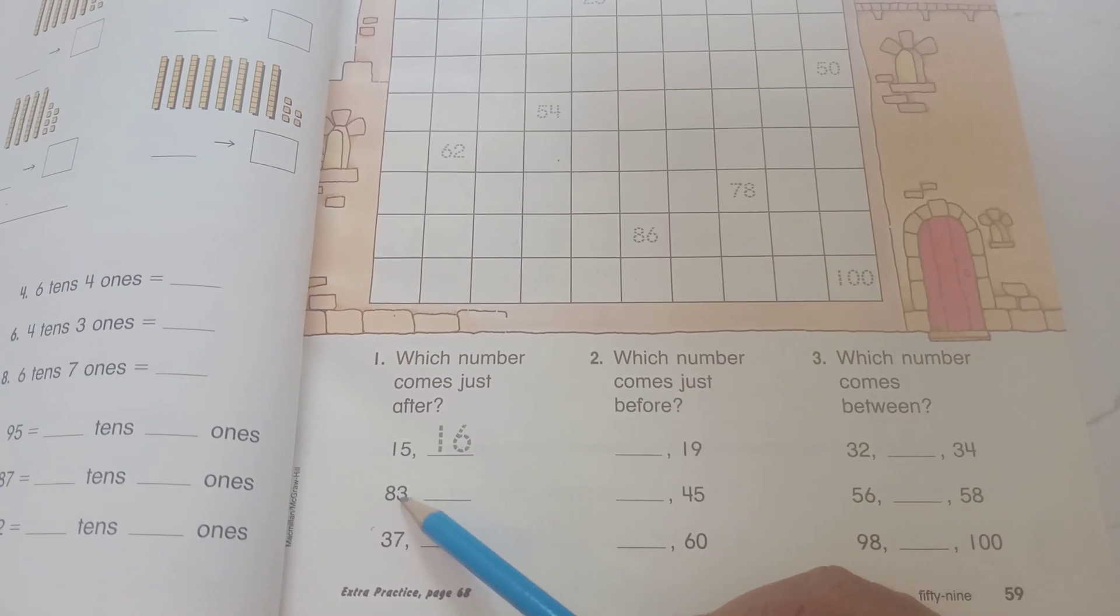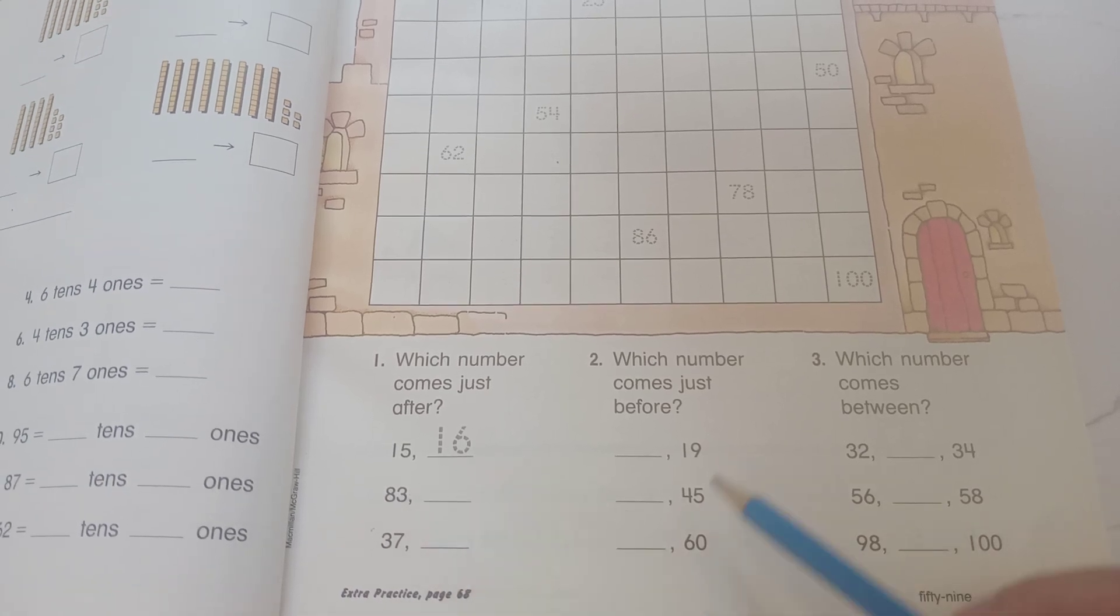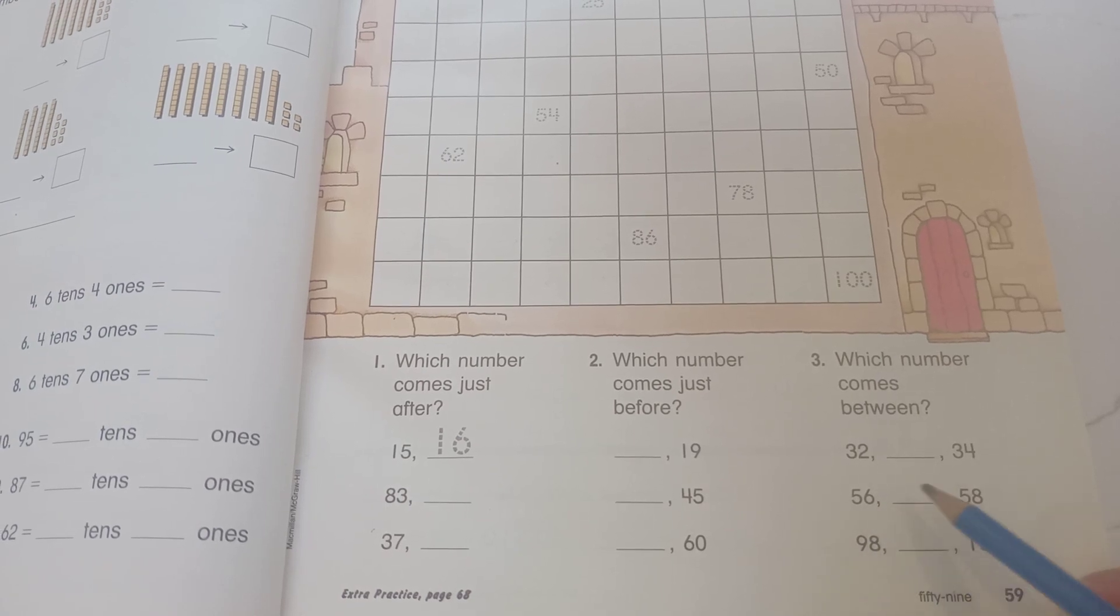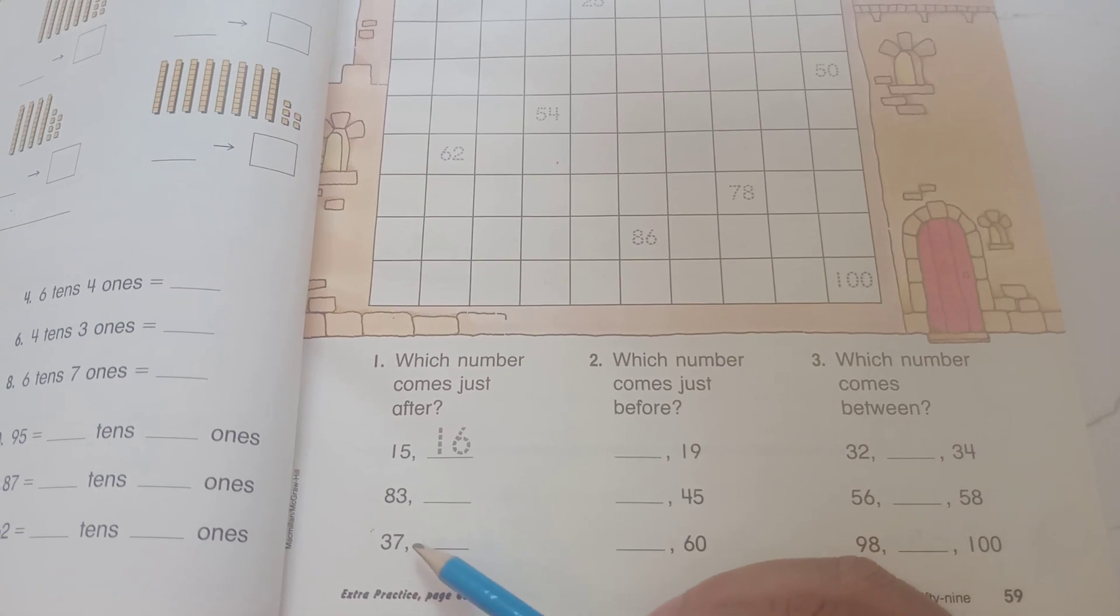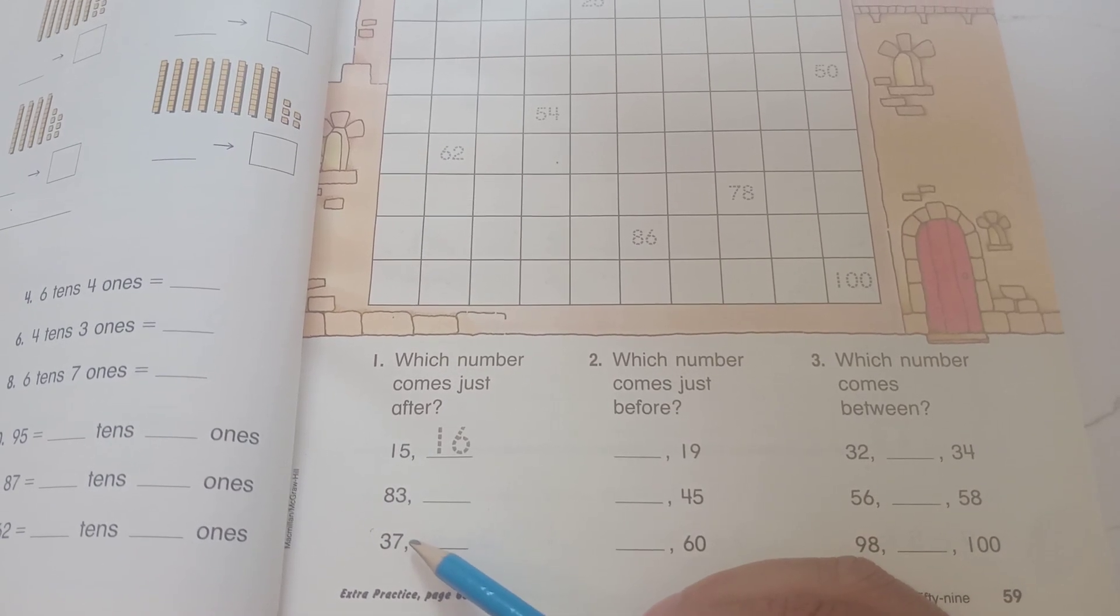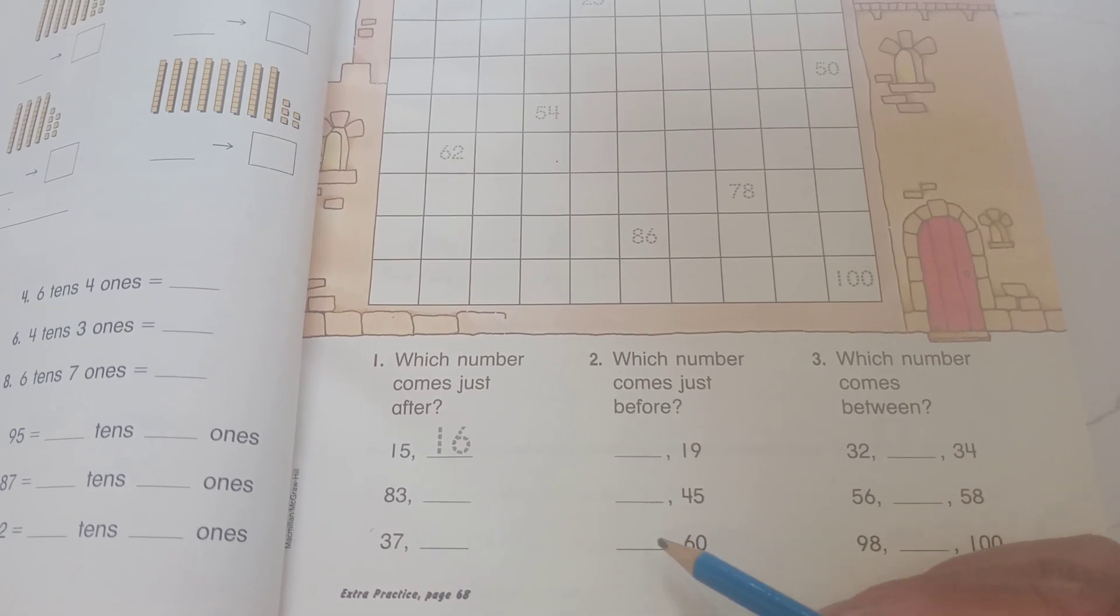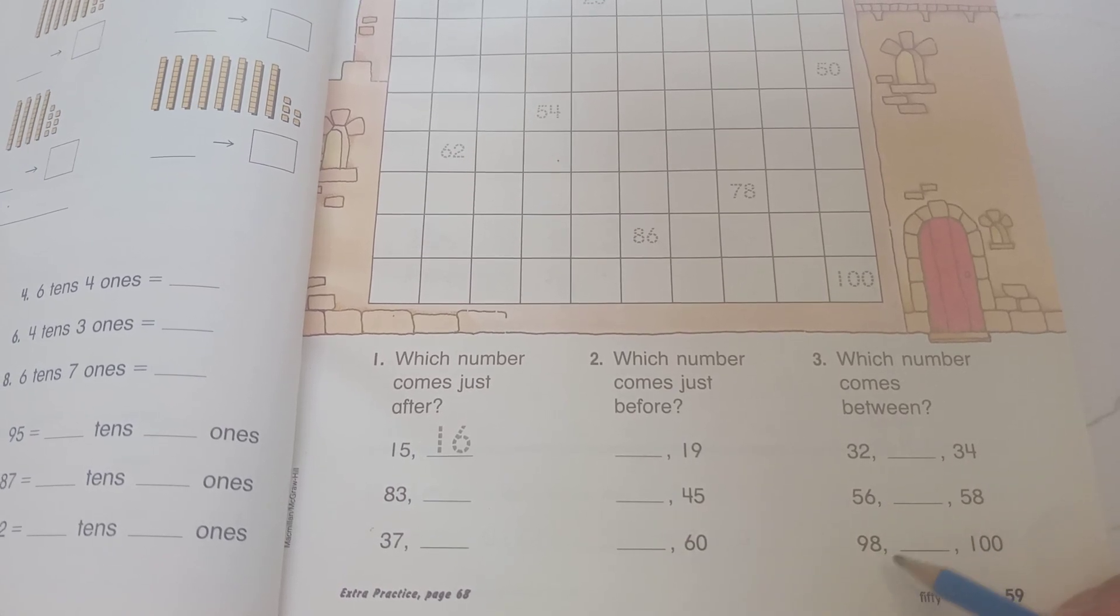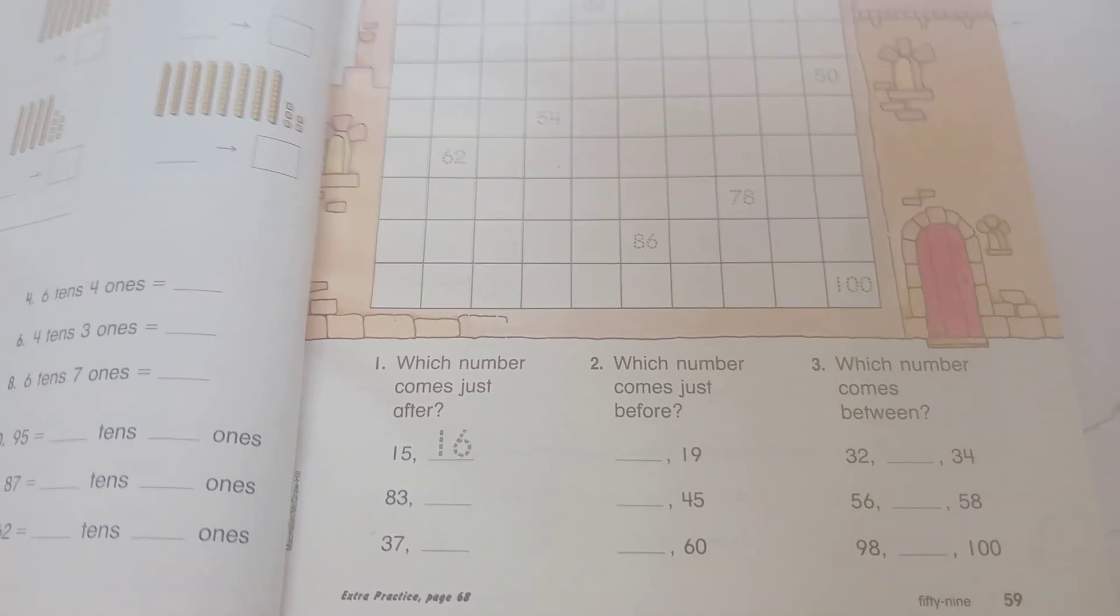And next, after 83 is 84, and before 45 is 44, and the middle of 56 to 58 is 57. After 37 is 38, and before 60 is 59, and the middle of 98 to 100 is 99.